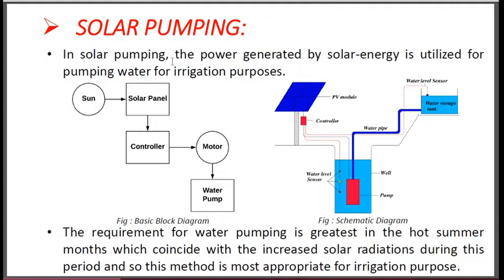Solar Pumping: The power generated by solar energy is utilized for pumping water for irrigation purposes, domestic use, or industrial water usage. The basic block diagram for solar pumping mainly consists of a solar panel, solar charge controller, motor, and water pump — the motor is mechanically coupled with the water pump. Sun energy is converted by the solar panel into electrical energy, and by using the controller we can control the electric power. This controlled power is given to the motor, which drives the water pump to deliver water output.